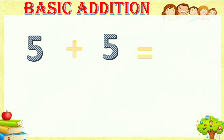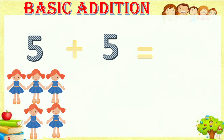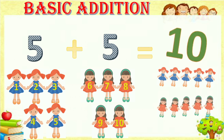For five plus five equals — for five we have one, two, three, four, five — five babies. And here another five — one, two, three, four, five — five babies. So totally we have to count now one, two, three, four, five, six, seven, eight, nine, ten — the answer is ten babies.